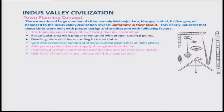Key features include: rectangular areas with proper orientation and cardinal points; dwelling places organized according to social status in some places; a grid-iron system of laying out streets cutting each other at right angles; an adequate system of water supply through wells and tanks; and an improvised system of fortification for defense and prevention of floods.